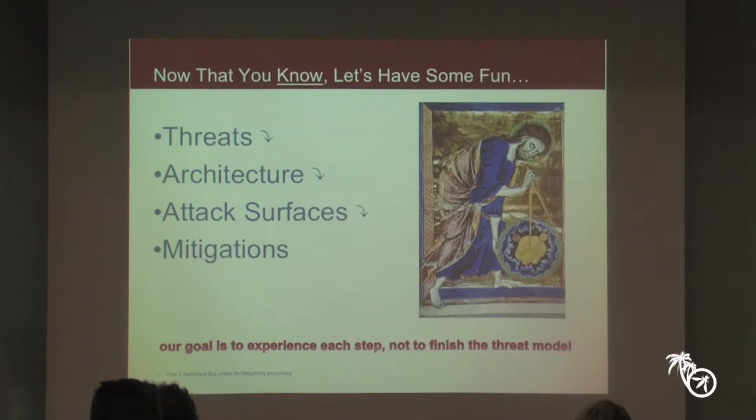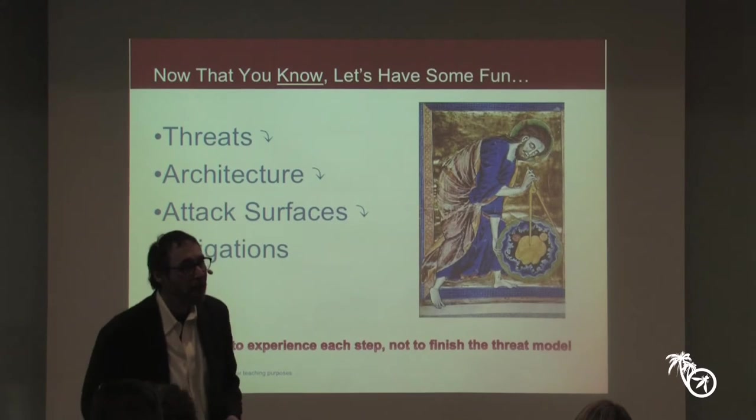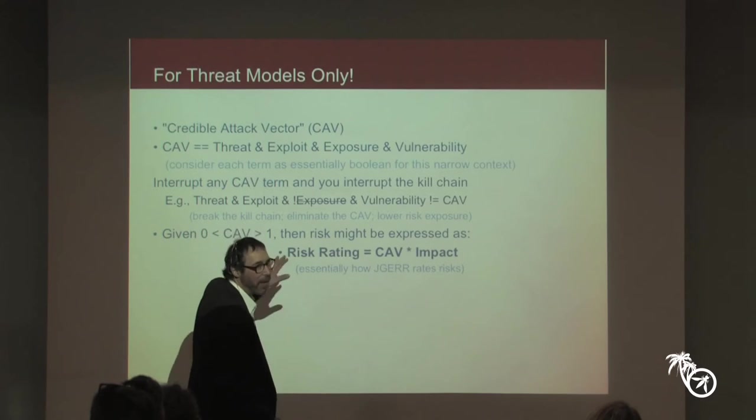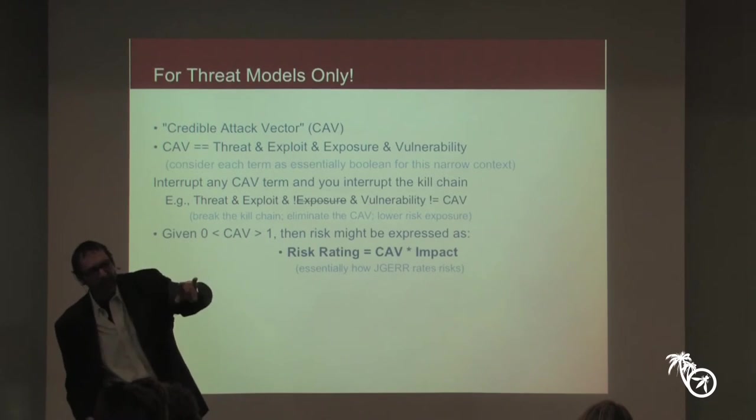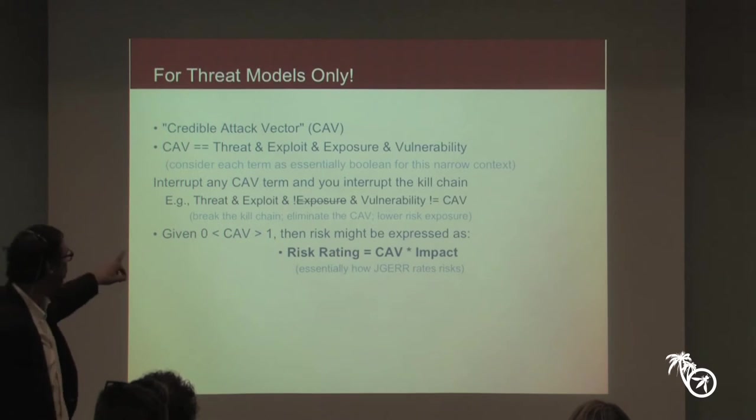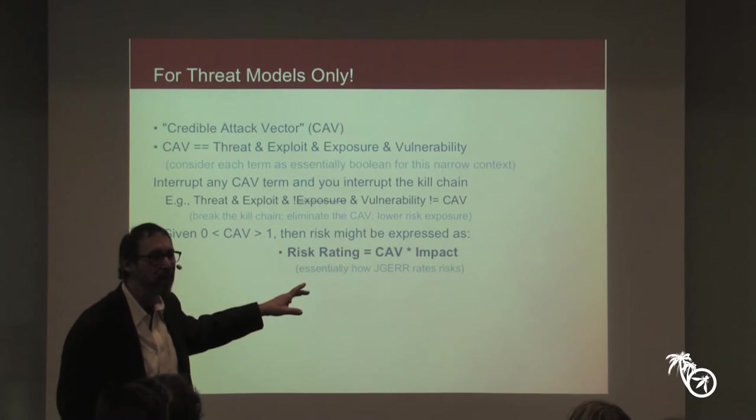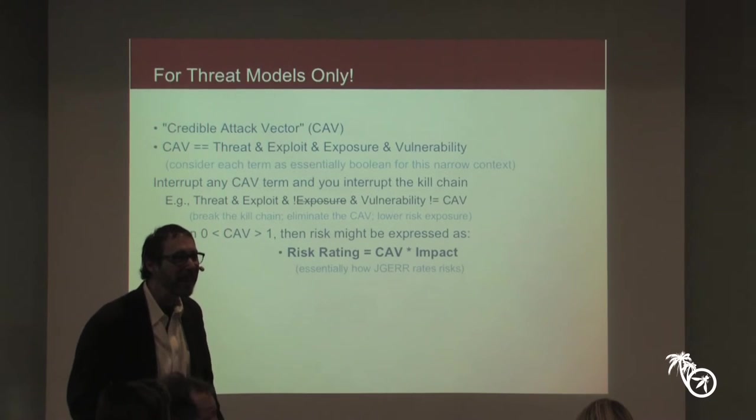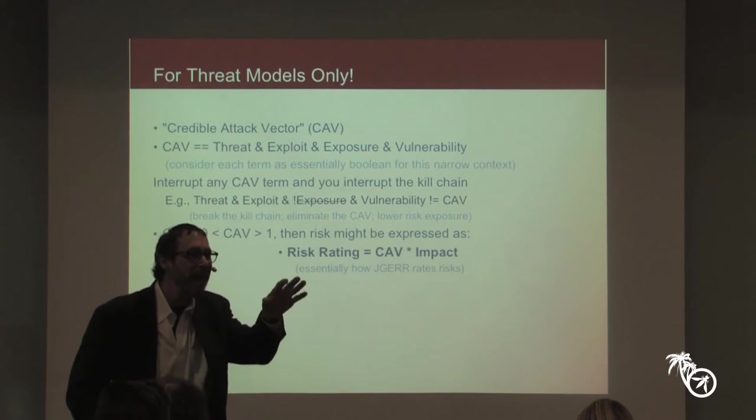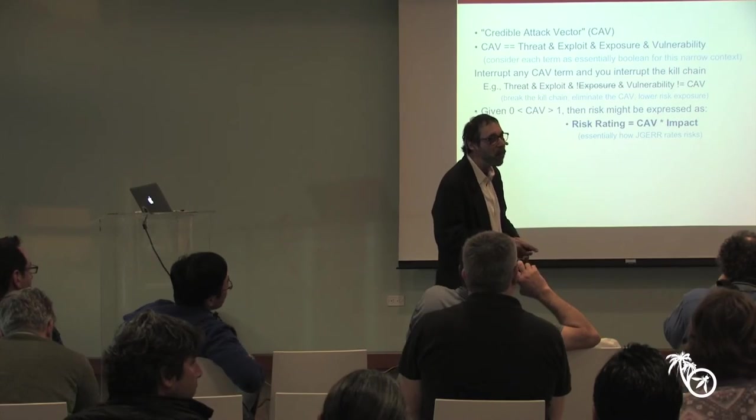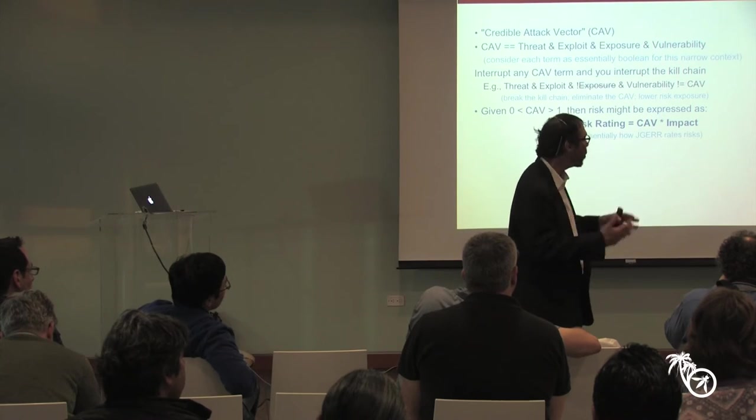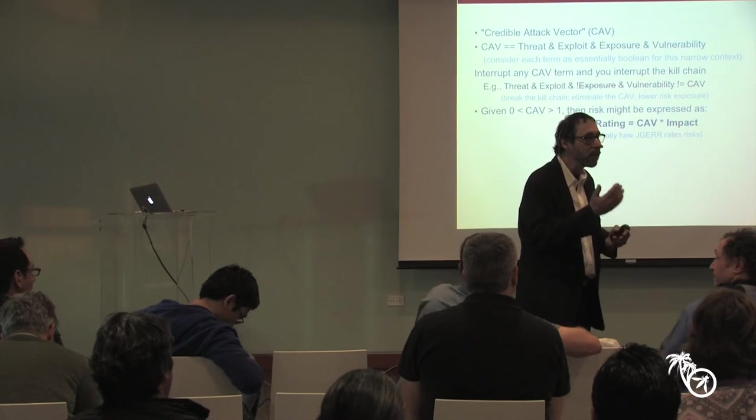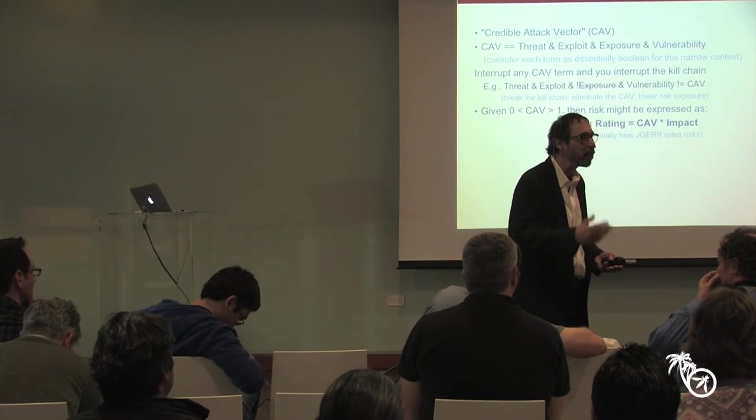And I'll give you an example. How much impact is there for a buffer overflow on a Windows machine that can only be exercised at debug level privileges? How much risk is there? How much impact? Zero. Because if you already have debug privileges, you're having your way with the machine. You're not exercising buffer overflows. You're doing what you came to do. So you have to have impact. You don't care about vulnerabilities that don't. That's a way of doing this really fast.